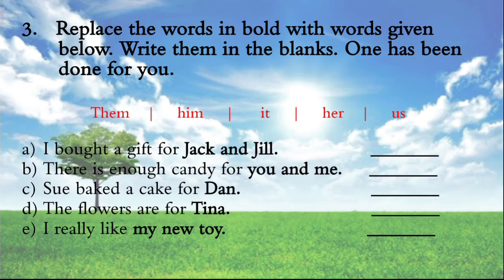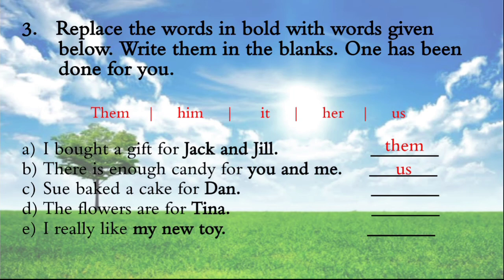Question three: replace the words in bold with the words given below. Write them in the blanks. One has been done for you. 'I bought a gift for Jack and Jill' — that becomes 'them'. 'There is enough candy for you and me' — use 'us'. The flowers are for Tina — Tina is a girl, so we use 'her' here.